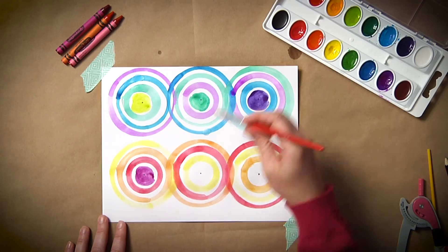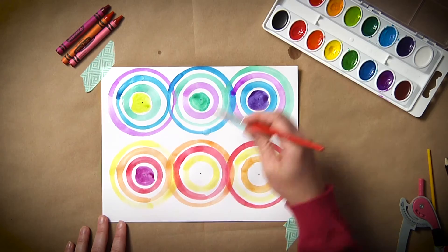Once they finish making their circles, there are many ways to fill the page with color. You can have students lightly shade the entire paper, or they can fill in the white space between the circles with different colors.